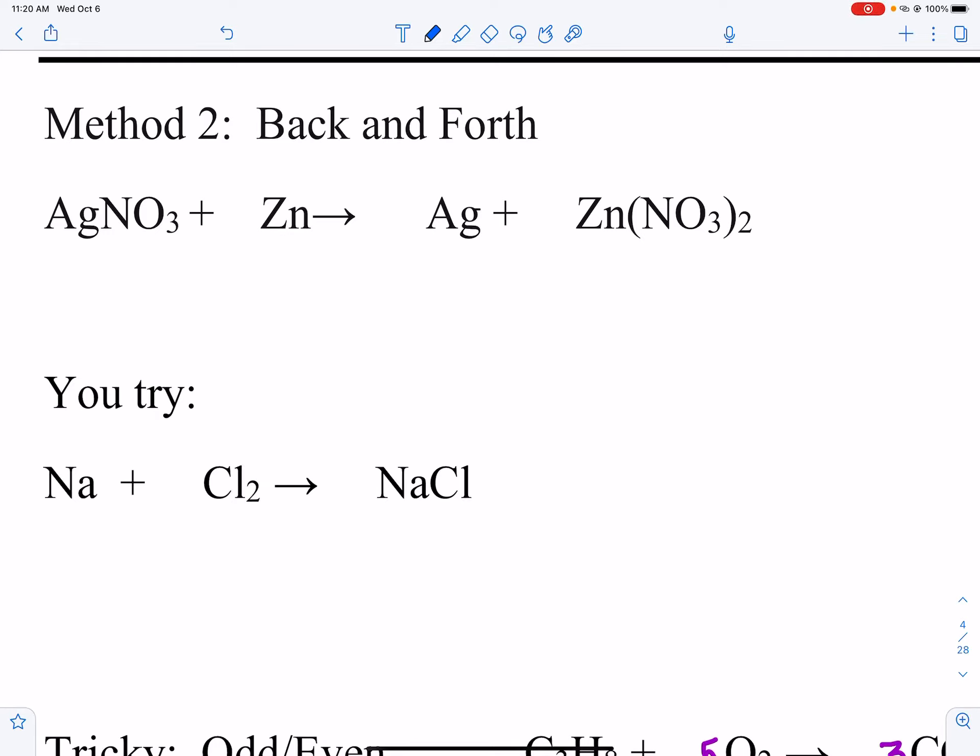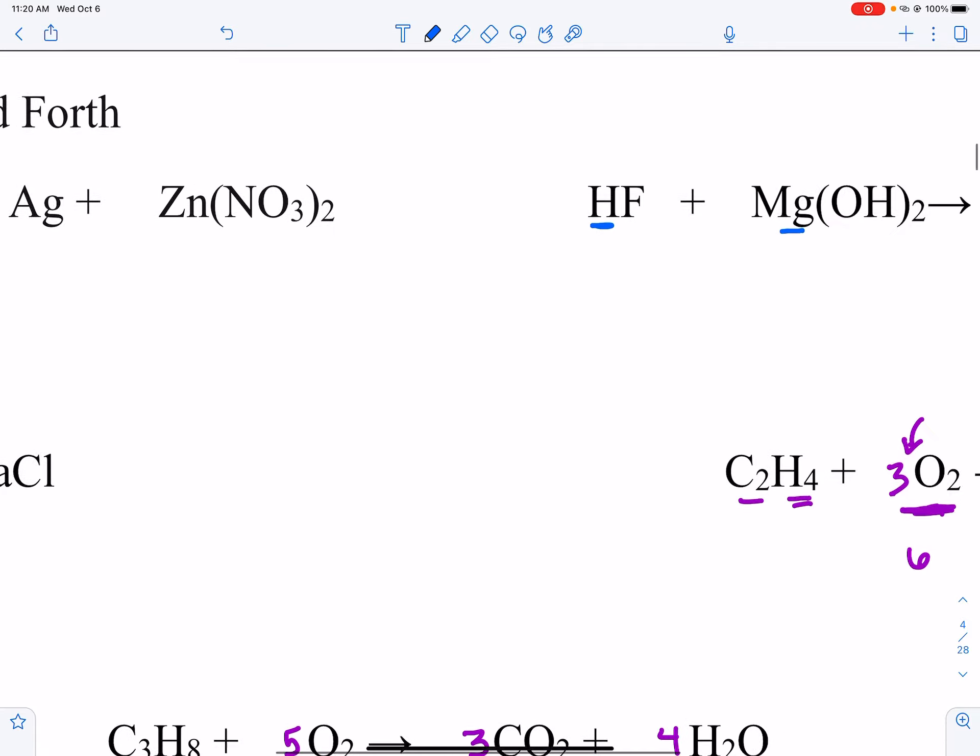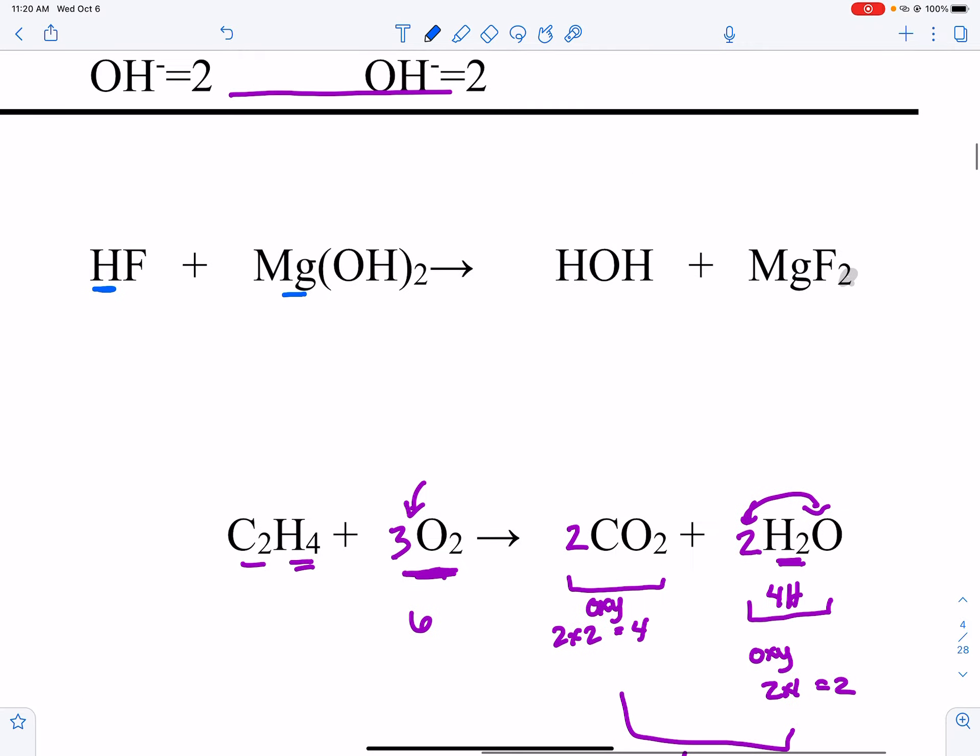The back-and-forth method is a faster method for balancing chemical reactions. It works best in situations where you have a single displacement, so you can see I've got a solo element right here, or double displacement where you've got a pair or groups, two groups of elements.